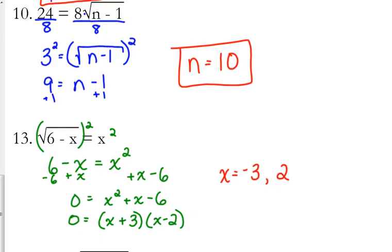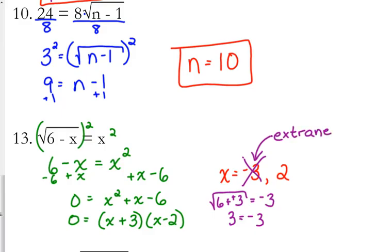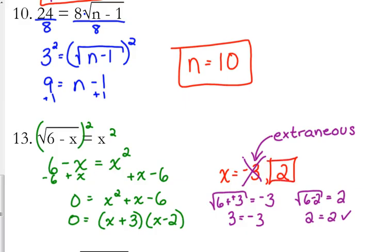Let's check them. When we plug in negative 3, we get the square root of 6 minus negative 3, which is supposed to equal negative 3. Subtracting a negative is the same as adding positive — 6 plus 3 is 9, and the square root of 9 is 3. But 3 is not equal to negative 3, so this is an extraneous solution. Let's check 2: the square root of 6 minus 2 should equal 2. 6 minus 2 is 4, and the square root of 4 is 2 — that works. So x equals 2 is the only solution.